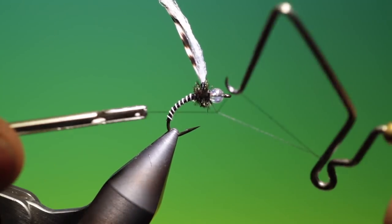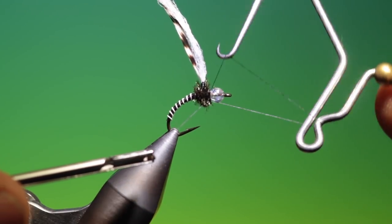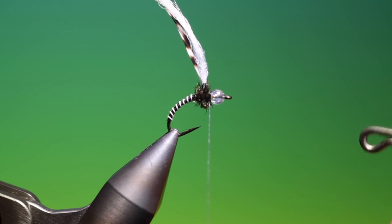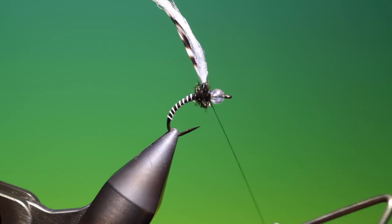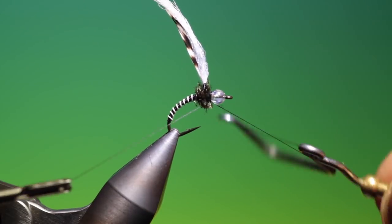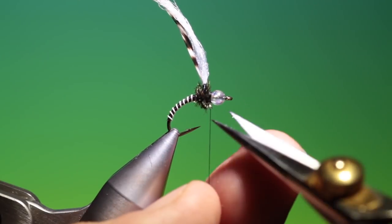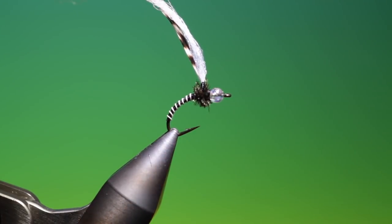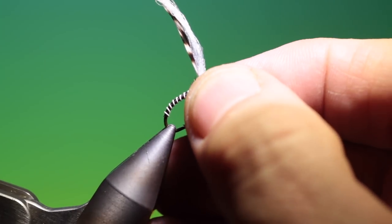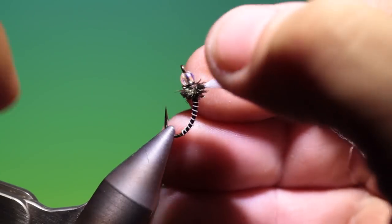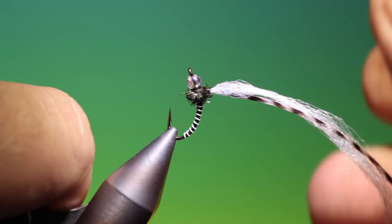I'm going to just get rid of that. Take our hackle plier, whip finisher. Give that one more. Secure that. You can varnish it as well if you wish. Remove that. And I'll just turn it around in the vise. Like so.